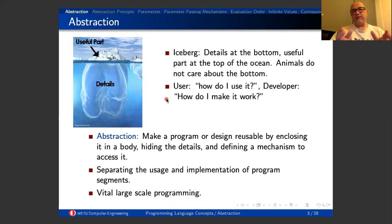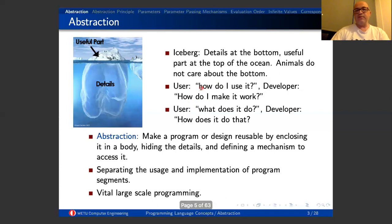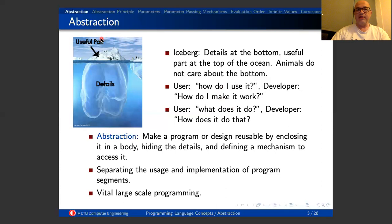This helps us not only solve the problem better, but also reuse that solution in other problems we may have later. We make our design or program reusable — we enclose it in a body, hide the details, and define the useful parts. When you create an abstraction, the user asks 'how do I use it?' The developer knows the details — how it works internally — but once it is complete, the user's concern is only how it is used. What does it do? And after development, users only need to learn a small interface.